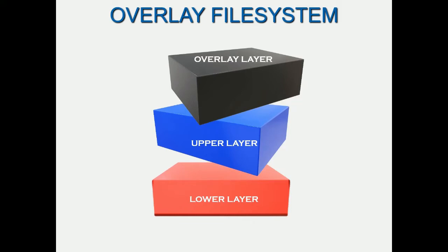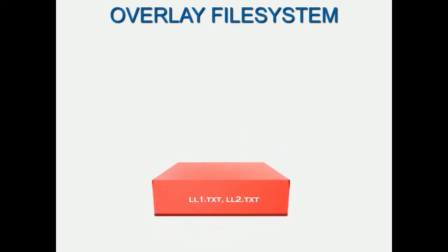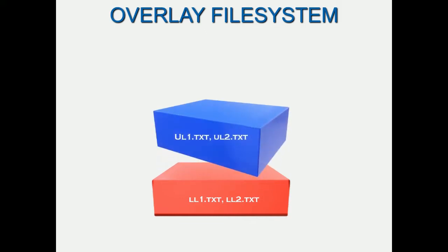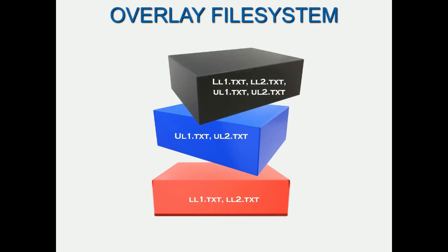Let's not worry about what a layer exactly is just yet — we will take a look at it in a minute. In the lower layer, let's say you have two files, creatively named ll1.txt and ll2.txt, and likewise two more files in the upper layer. In the overlay layer, what you will see is a combination of all the files and directories from both the lower and upper layers.